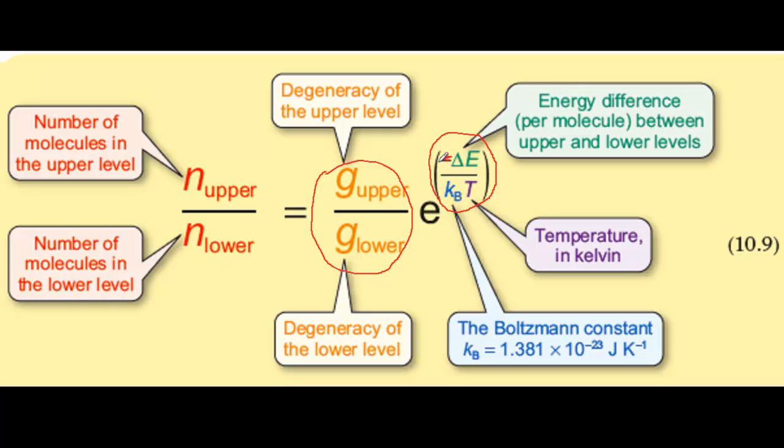So now I'm in a position to say what the really important parts of Equation 10.9 are. They are the variables in the exponent. And these variables are the energy difference, delta E, which is the energy difference between the upper and lower levels, and the temperature, T.